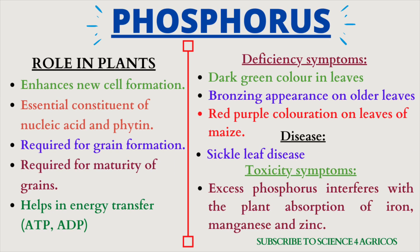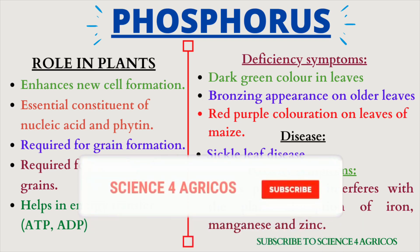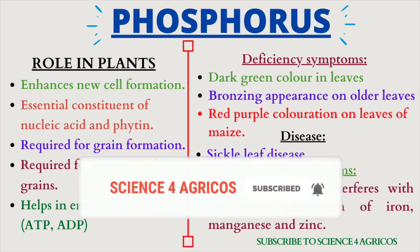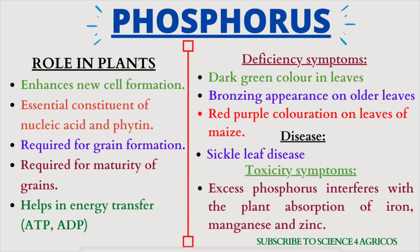Now let's learn about phosphorus. Phosphorus enhances new cell formation in plants, it is an essential constituent of nucleic acid and phytin, it is required for grain formation and maturity of grains, and it helps in energy transfer like ATP and ADP.